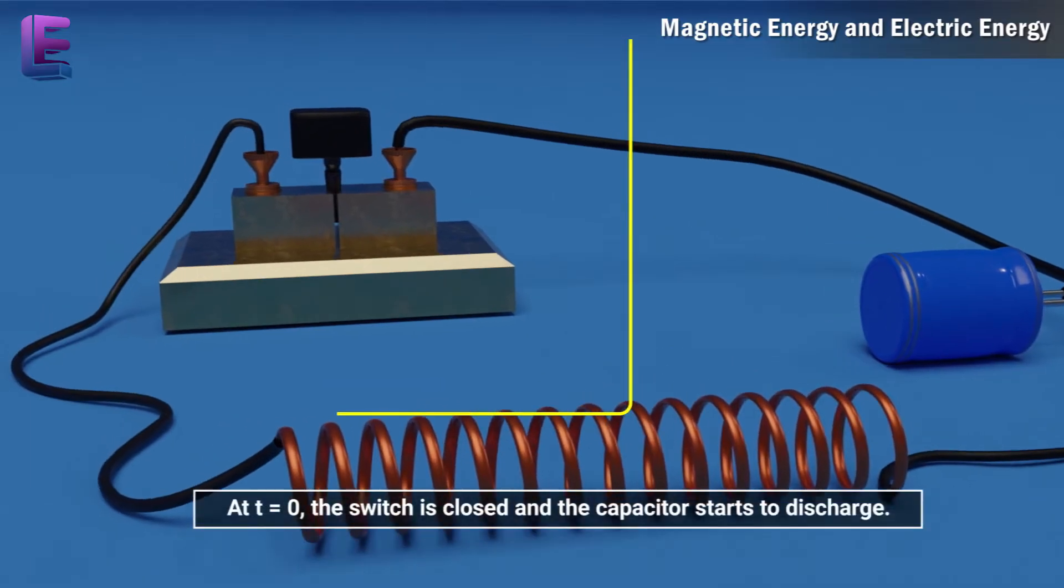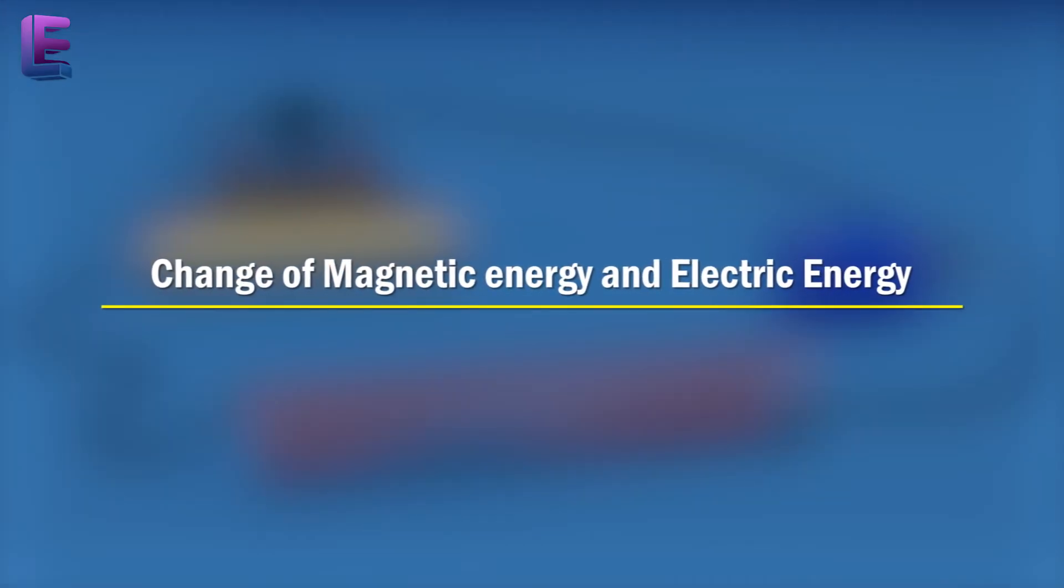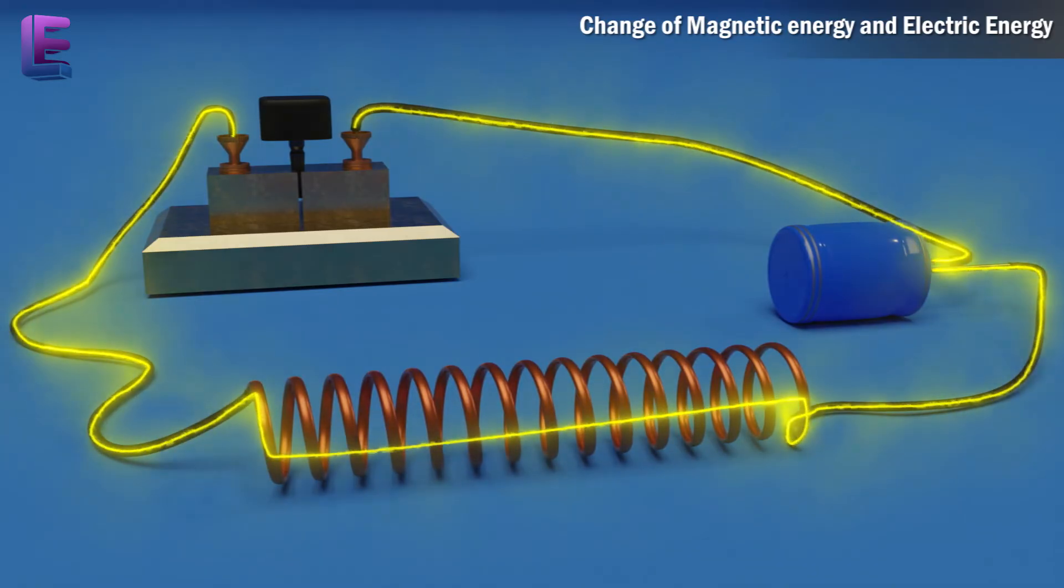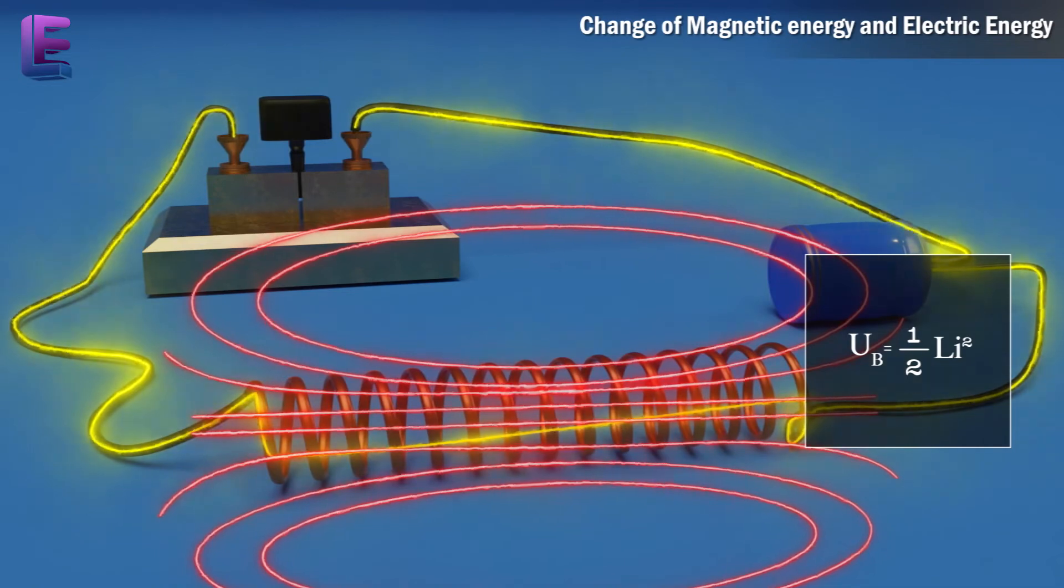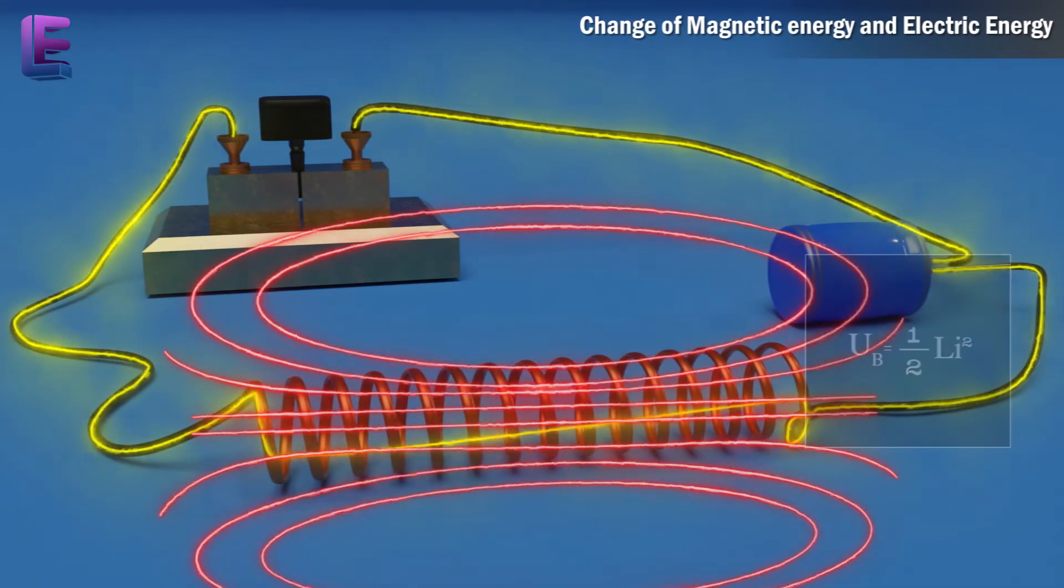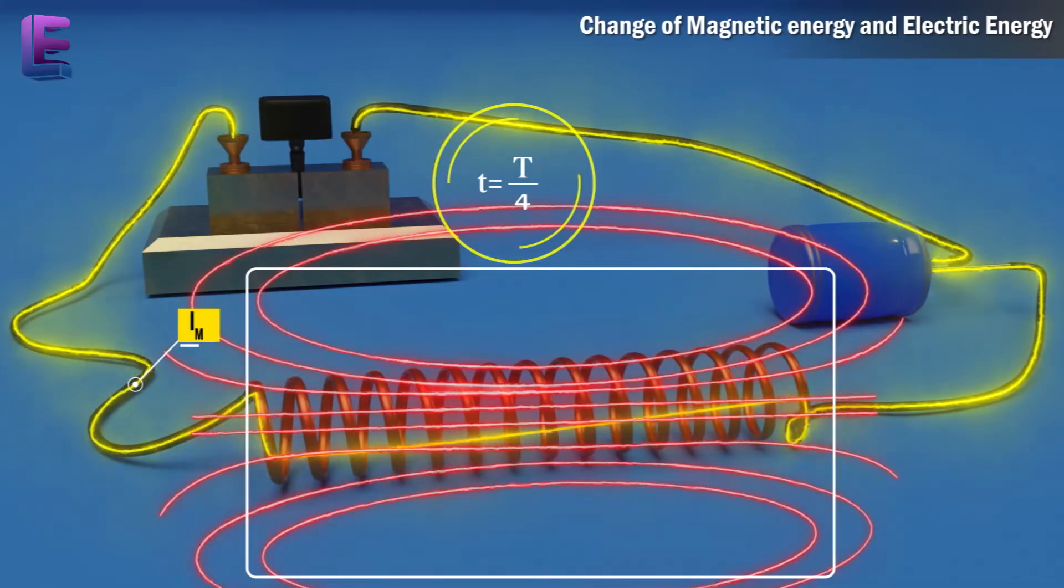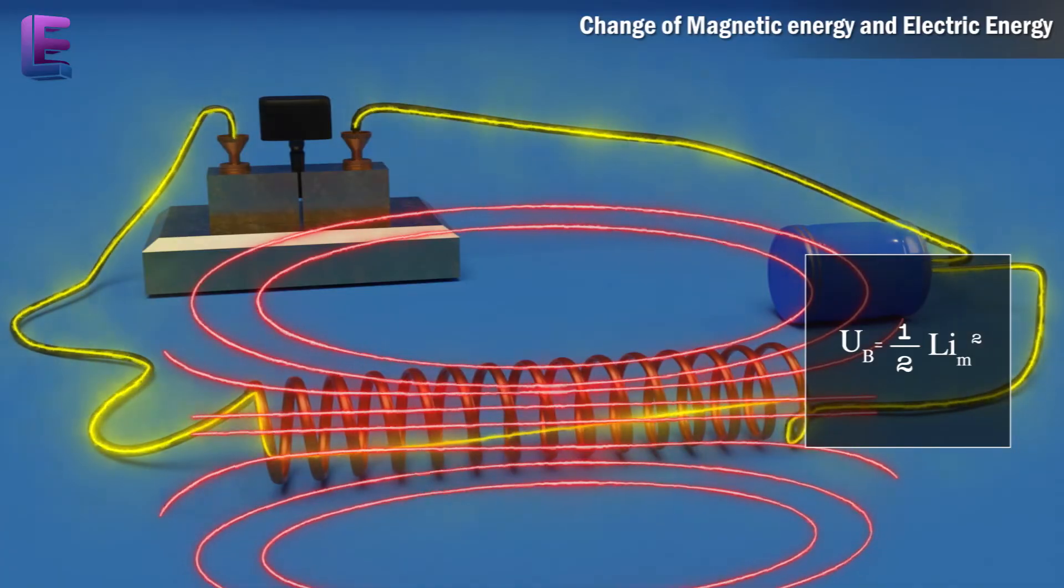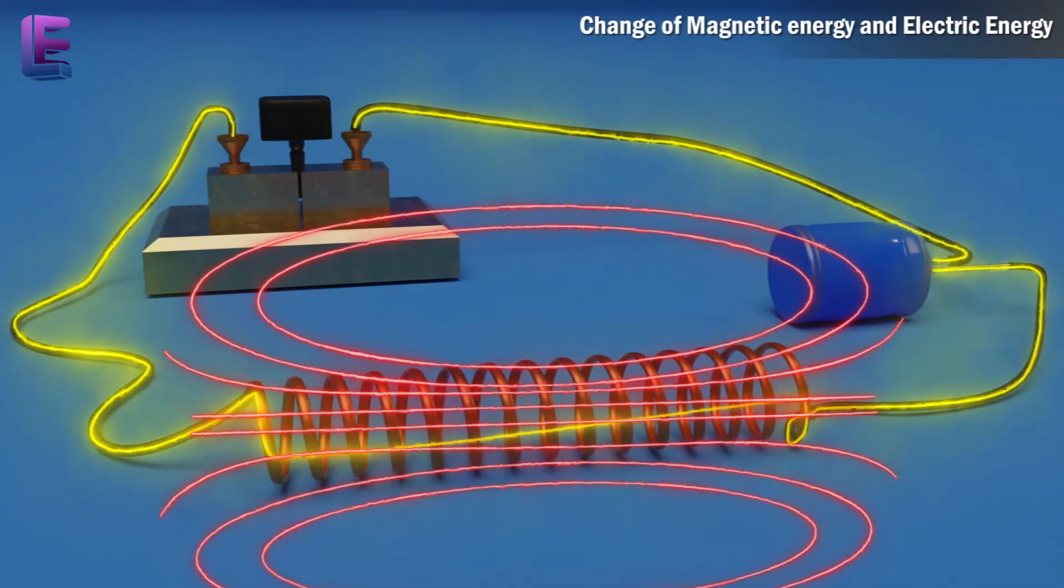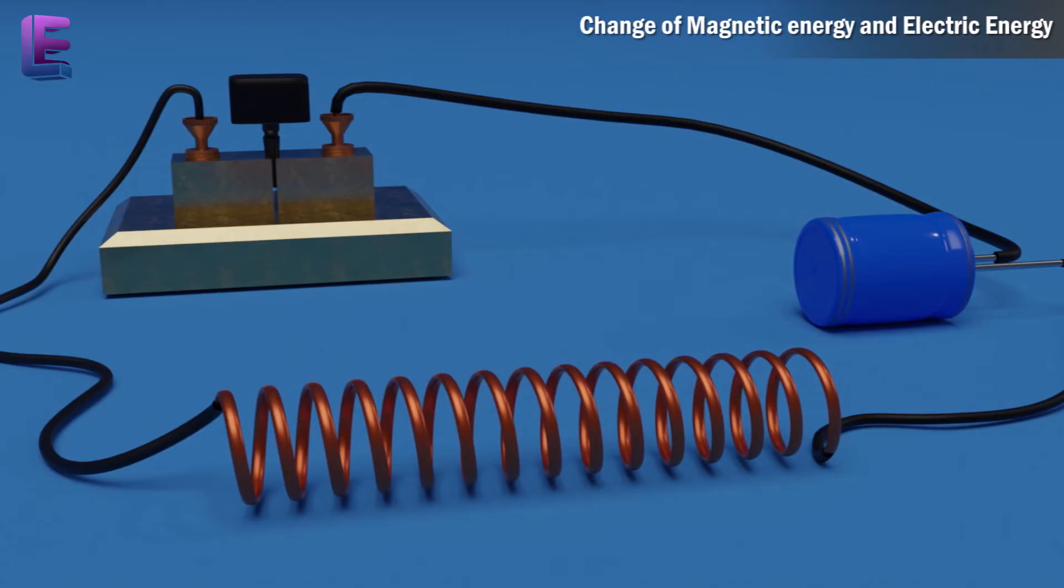At t equals 0, the switch is closed and the capacitor starts to discharge. Change of magnetic and electric energy. As the current increases, it sets up a magnetic field in the inductor and thereby some energy gets stored in the inductor in the form of magnetic energy, ub equals 1 by 2 L i square. As the current reaches its maximum value im at t equals T by 4, all the energy is stored in the magnetic field. ub equals 1 by 2 L im square. Also, the maximum electrical energy equals the maximum magnetic energy.